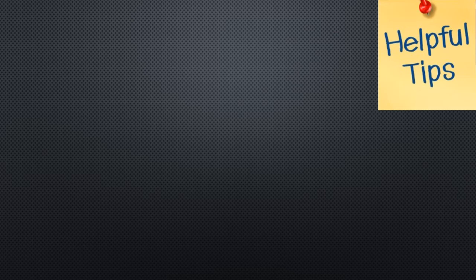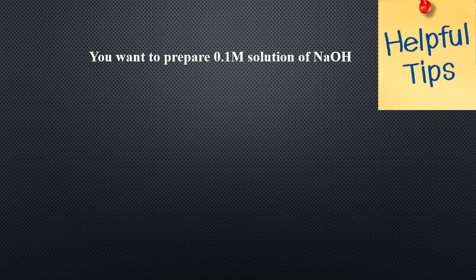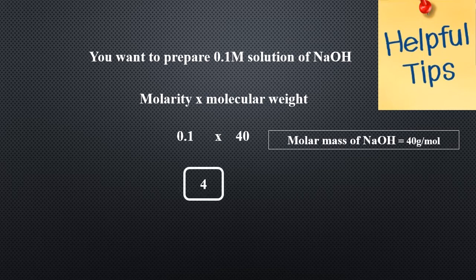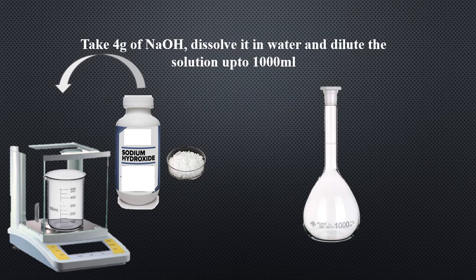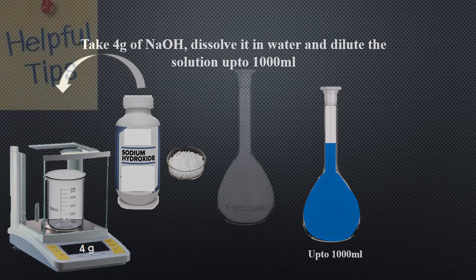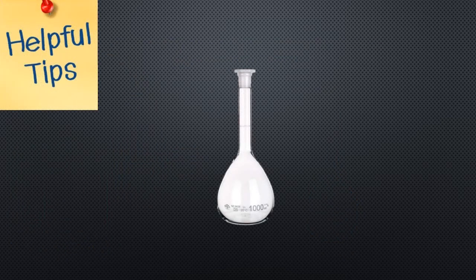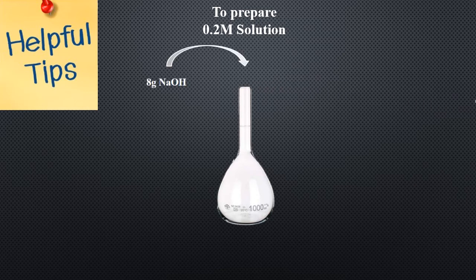For example, to prepare a 0.1 molar solution of sodium hydroxide, multiply 0.1 by 40 — the answer is 4. Take 4 grams of sodium hydroxide, dissolve it in water, and dilute up to 1000 ml. Similarly, to prepare a 0.2 molar solution, multiply 0.2 by 40 — the answer is 8. Take 8 grams of sodium hydroxide, dissolve it in water, and dilute up to 1000 ml.